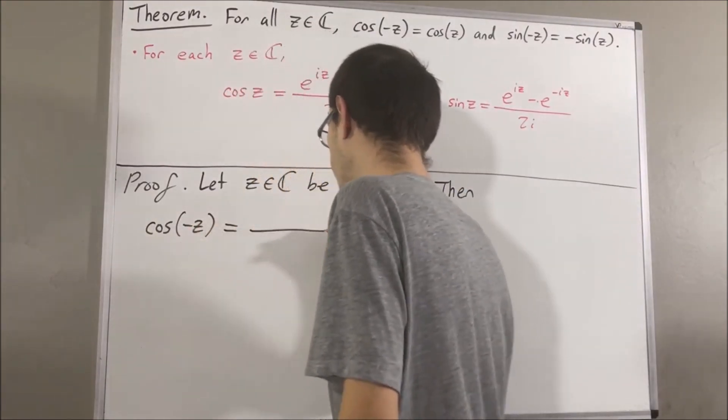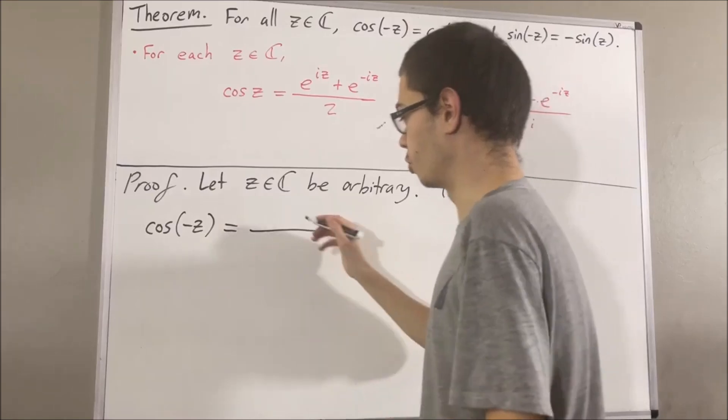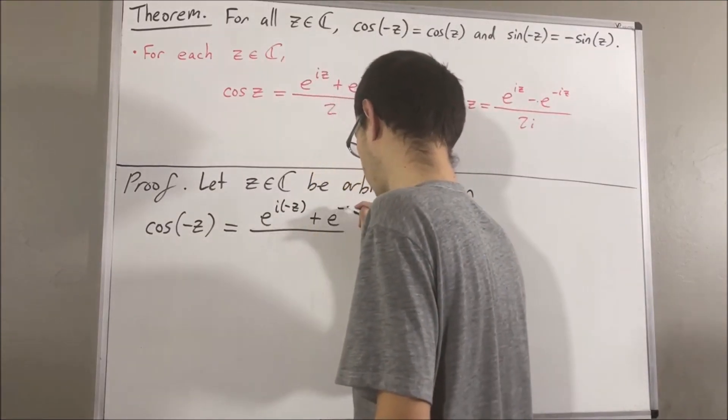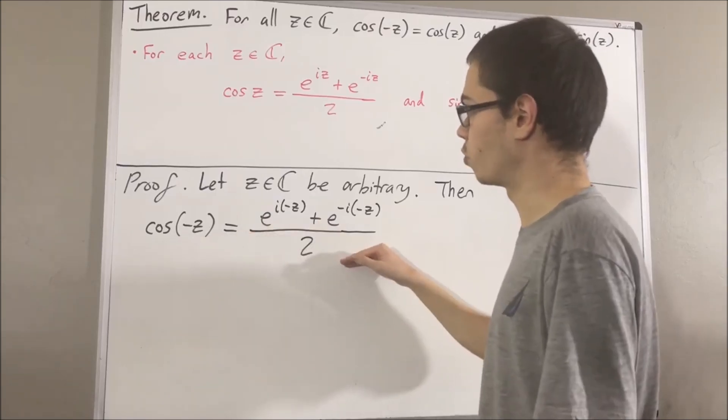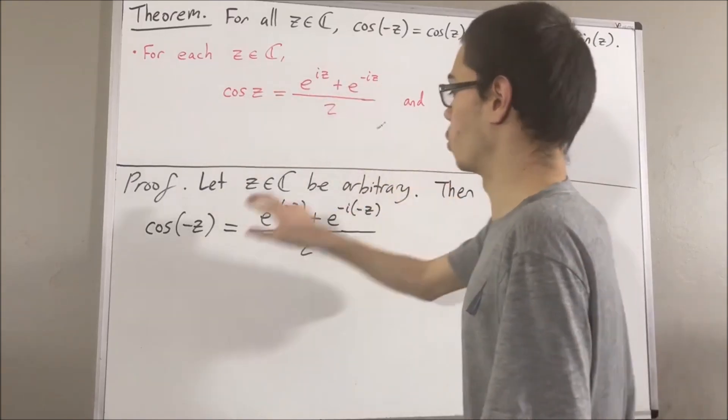By definition, the cosine of negative z is equal to e to the i times negative z plus e to the negative i times negative z over 2. All we've done here is substitute negative z for z.